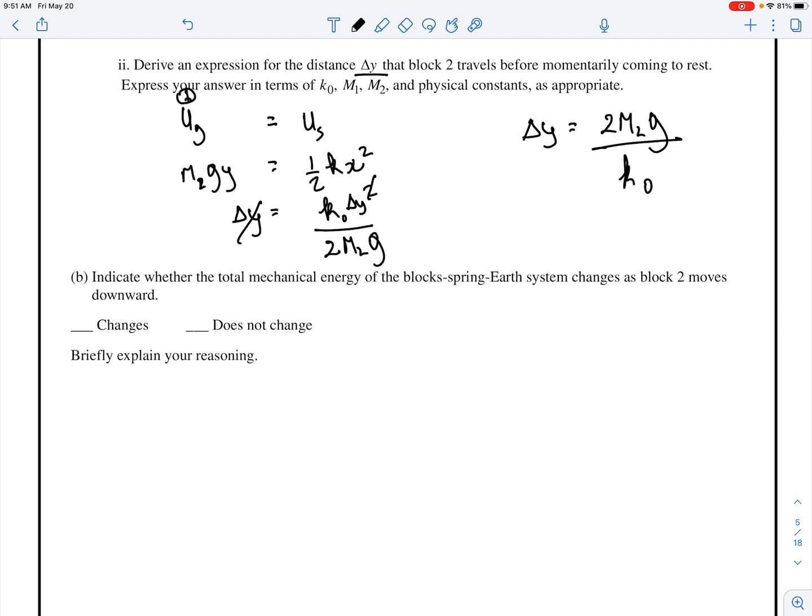Indicate whether the total mechanical energy of the block-spring system changes as block 2 moves downwards. So the mechanical energy would be the potential plus the kinetic. We just said that the whole thing was conserved. So no, the mechanical energy cannot change. The reason why it doesn't change is because you don't have any external forces or anything acting on it. Where would the extra energy come from? You're not losing any energy to friction, so there's nothing being lost there. All your kinetics are being conserved. All your potentials are being conserved. So you're not losing anything to the surroundings and you're not gaining anything from the surroundings. That's it. Well, thank you AP. That wasn't too bad. And as always kids, remember, don't be a moo moo.